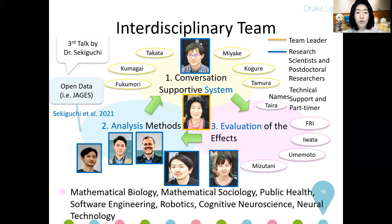All research activities have been done by an interdisciplinary team, with backgrounds ranging from mathematical biology, mathematical sociology, public health, software engineering, robotics, cognitive neuroscience, and neurotechnology. The conversation support system was first developed, then used to evaluate effects and collect evidence. The collected data were analyzed by newly developed analysis methods, and results were reflected in the next version of the system.